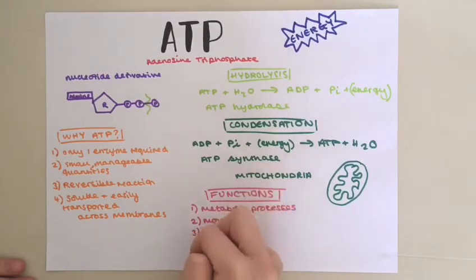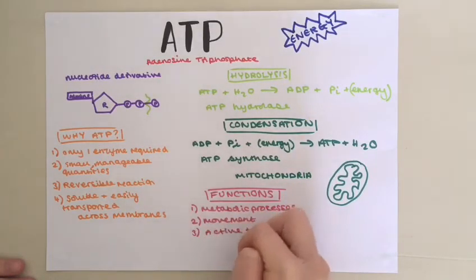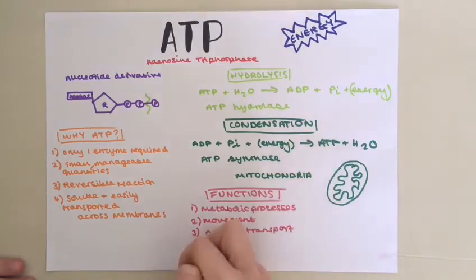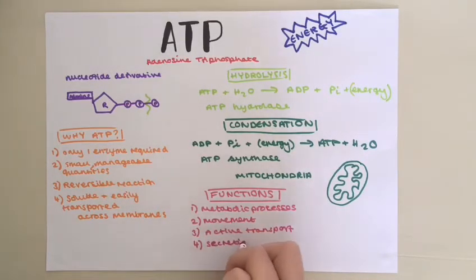Thirdly, it's used for active transport. Also, it's used for secretion. ATP is needed to form lysosomes. And lastly, it's used for phosphorylation.